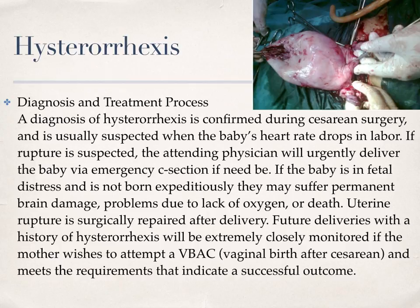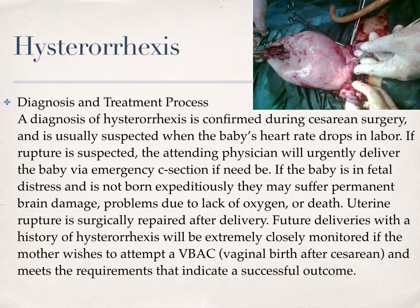Diagnosis and Treatment: A diagnosis of hysterorexis is confirmed during cesarean surgery and is usually suspected when the baby's heart rate drops in labor. If rupture is suspected, the attending physician will urgently deliver the baby via emergency C-section if need be. If the baby is in fetal distress and is not born expeditiously, they may suffer permanent brain damage, problems due to lack of oxygen, or death. The uterine rupture is surgically repaired after the delivery. Future deliveries with a history of hysterorexis will be closely monitored if the mother wishes to attempt a VBAC — vaginal birth after cesarean — and meets the requirements that indicate a successful outcome.